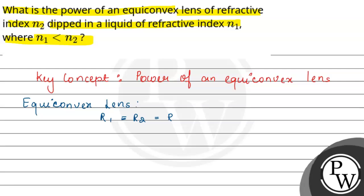We have the refractive index of the lens material. Refractive index of lens is N2. Refractive index of liquid is N1.